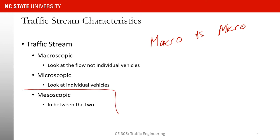Mesoscopic level sits in between macro and micro. When we want a good balance between level of detail and computational complexity, we use meso. For example, in meso we can track different vehicles, but rather than assigning different speeds to each vehicle, we find the average speed of the flow and assume all vehicles travel at that speed. While we track all vehicles, we make simplifying assumptions like this on speed to reduce computational complexity.